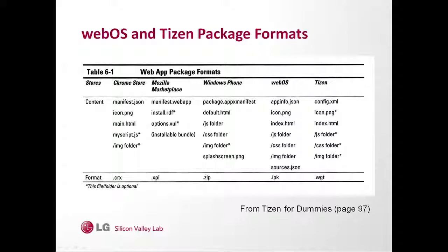Both WebOS and Tizen apps have icons, index.html, and then JavaScript, CSS, and images. In WebOS you have appinfo.json, which describes the information the app needs to run on the device — where the icons are, where the index.html is, version number, and so on. In Tizen you have config.xml, which does a similar thing. So if you're a WebOS developer or you've written an Enyo app, you can basically just take the same app, add the Tizen config.xml, and you're pretty much good to go. In WebOS you're packaging an IPK; in Tizen you're packaging a WGT, which is basically a renamed zip file.